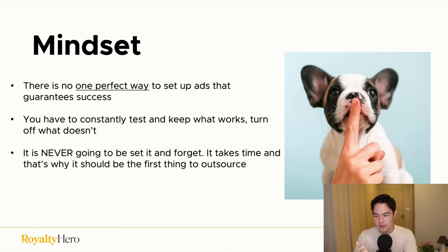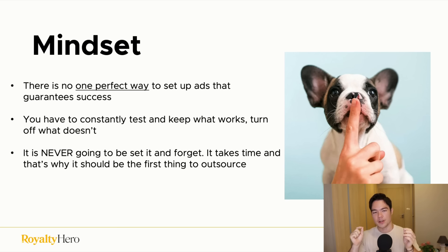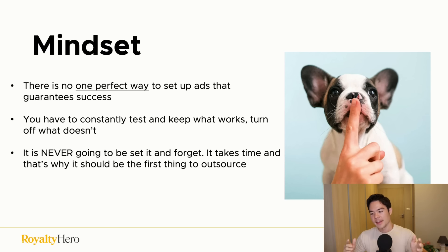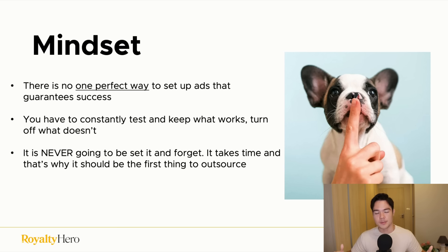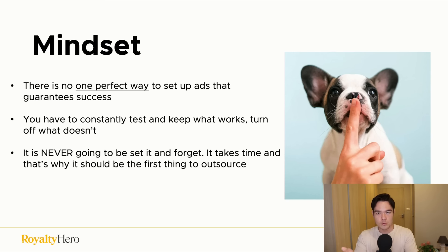Another thing to understand is there's no one perfect way to set up ads that guarantees success. A lot of people think there's some secret method — the exact campaign type, exact bids, exact time to create it, exact number of keywords — that'll work for every single book regardless of niche. That is not how it works. There is no perfect setup that absolutely guarantees success. The way ads actually work is you have to constantly test new campaigns, new targets, see what works, keep what does, and turn off what doesn't.